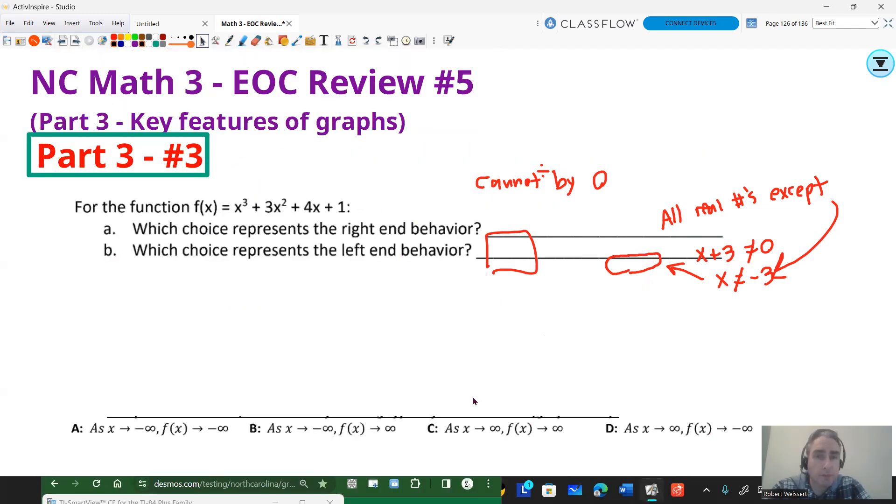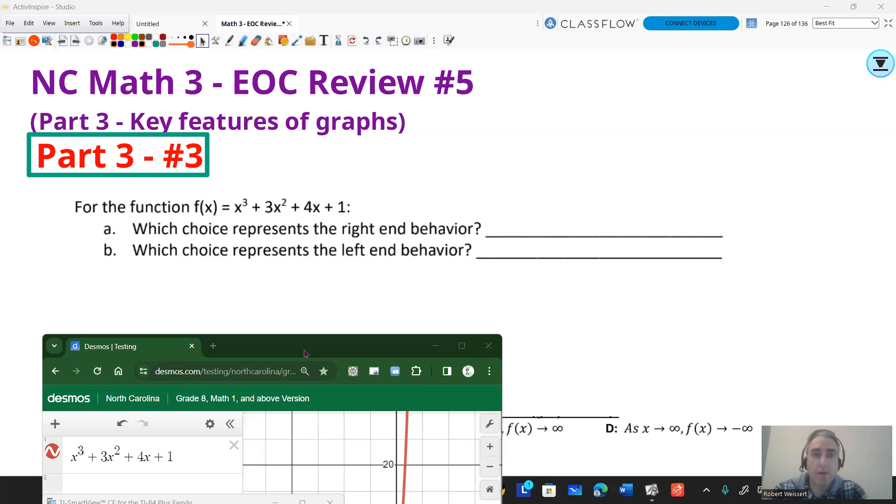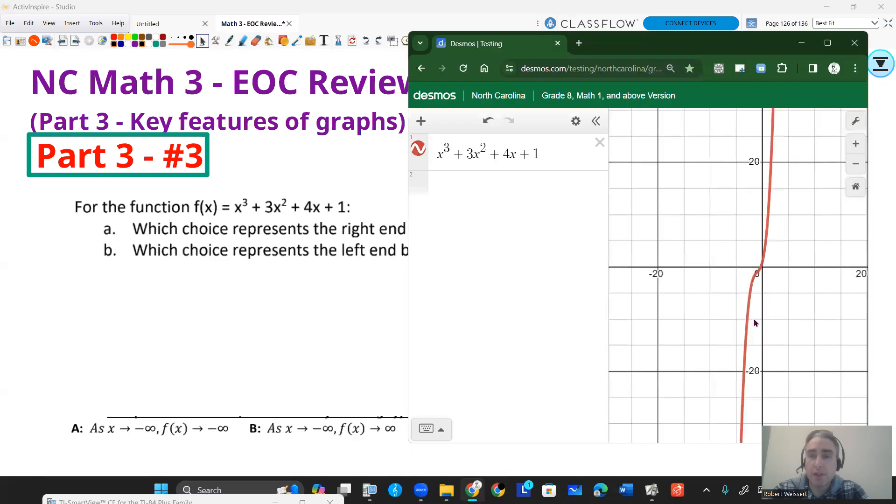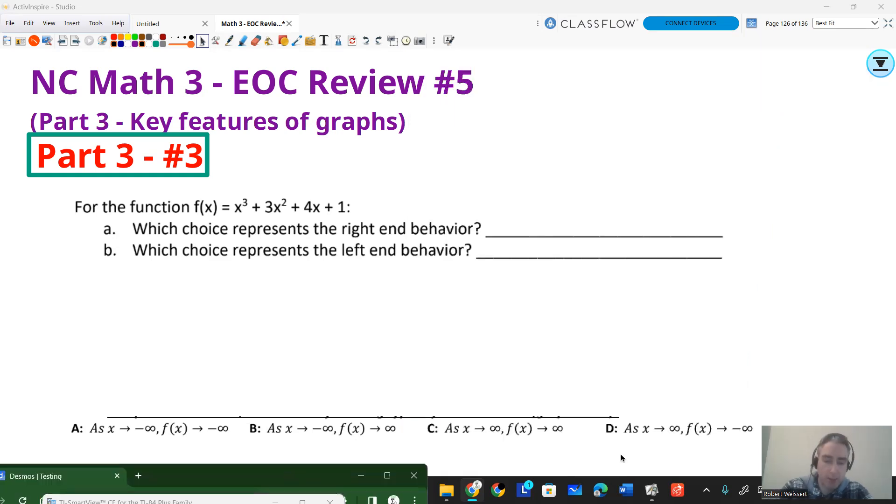Next question. For this question and the question afterward, we're going to be dealing with end behavior. It is in your best interest to graph the function to see how it opens up on the left and right side. So I would put that in Desmos before we begin. Here is the graph of x cubed plus 3x squared plus 4x plus 1. You can see that on the left side, it opens downward, and on the right side, it opens upward. I'm going to sketch this graph out so I can explain how to interpret these end behaviors at the bottom.